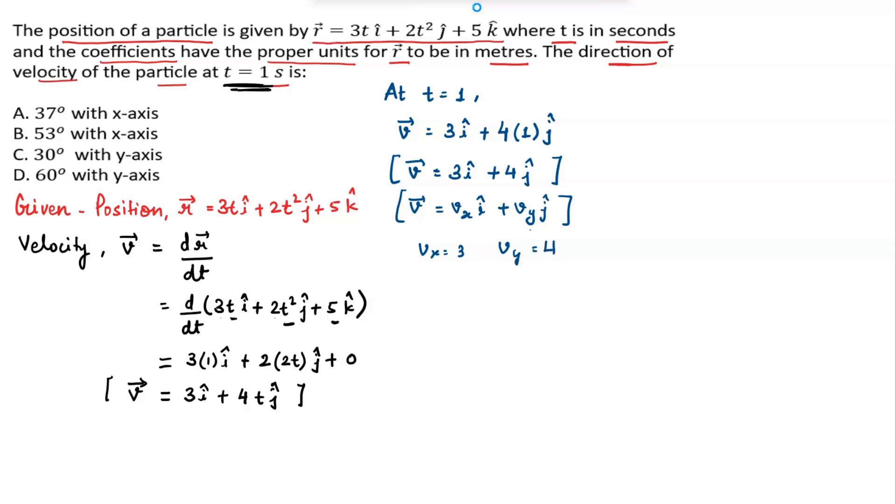Now the direction of velocity is given by the formula tan θ equals v_y divided by v_x. Now substituting the values, tan θ equals v_y is 4 divided by 3. This can be written as θ equals tan inverse 4 upon 3. Now after solving this, we get θ equals 53 degrees.